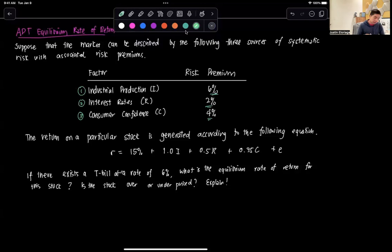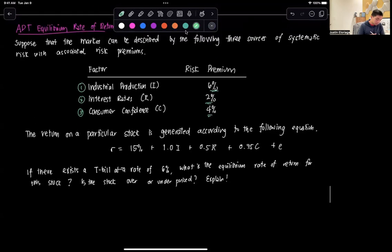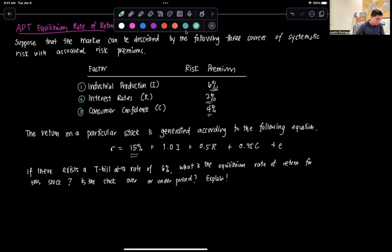Then we're given that the return on a particular stock is generated using the equation. Fifteen percent in this particular equation is the actual expected return on the stock. And then we have some combination of the three factors and an error term e.